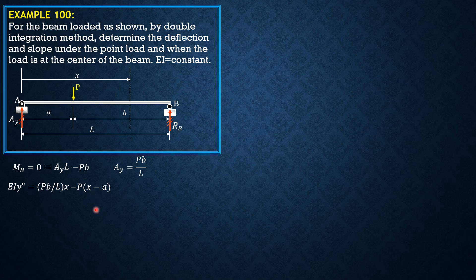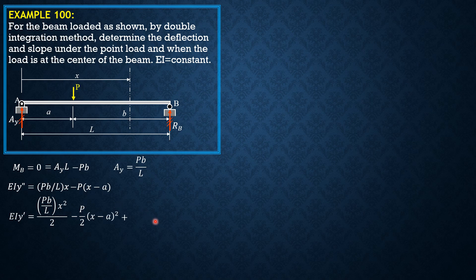Integrating, EIY prime equals PB over L times X squared over 2, minus P over 2 times the quantity X minus A squared, plus constant of integration C sub 1.